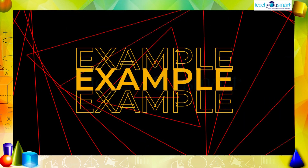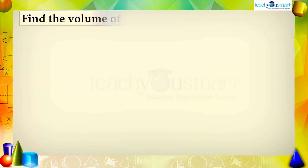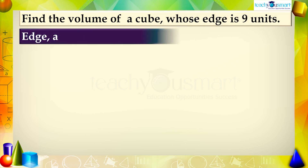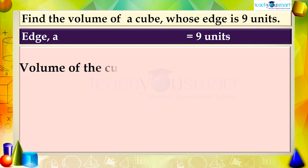Let's see an example. Find the volume of a cube whose edge is 9 units. Given: edge a equals 9 units. The volume of the cube equals a³.